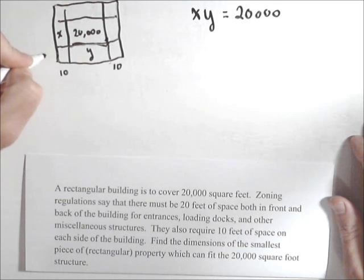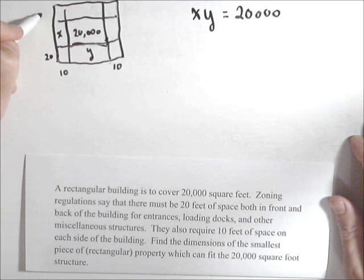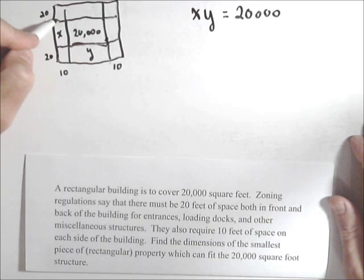Similarly, over here we're adding 20 to x on both places. And so this would be x plus 40.